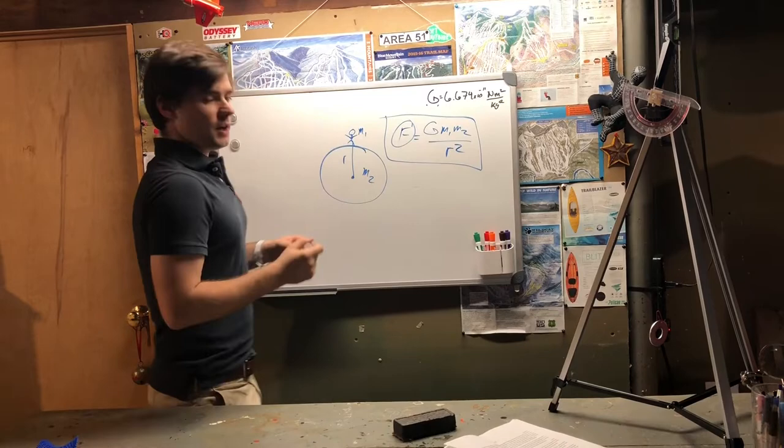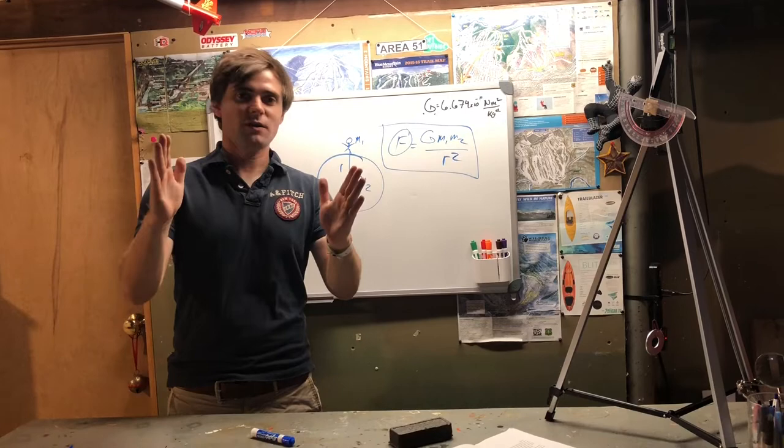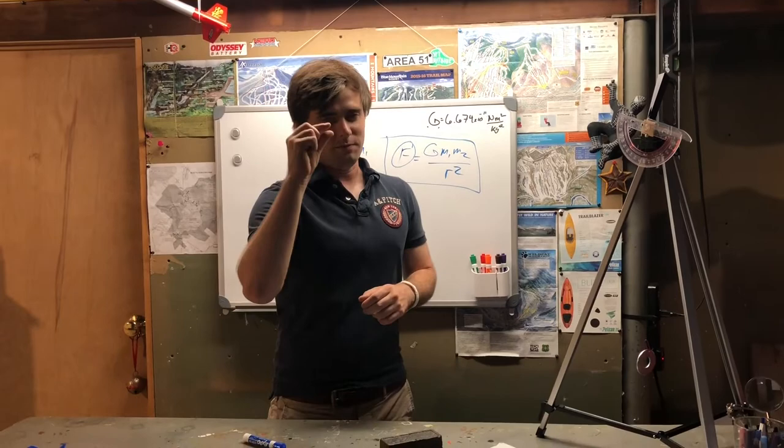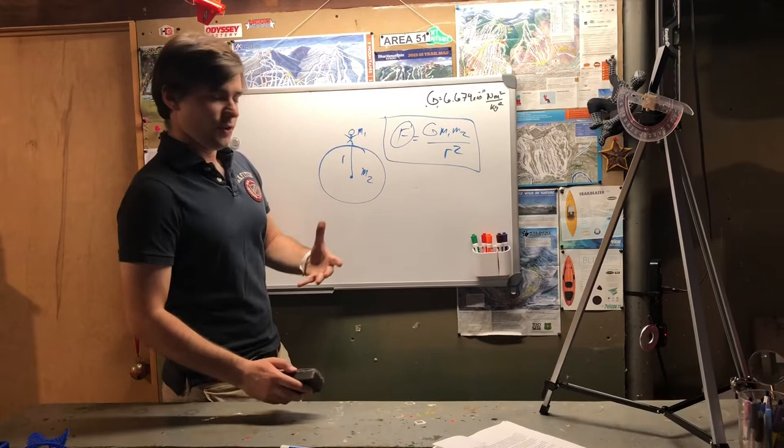Now, one interesting thing that this equation implies is that when you jump up off of the Earth, and you put a small distance between the two of you, the Earth is pulling you down to it, and you're actually pulling the Earth up to you. The difference in mass between the two of you is so great that the Earth moves a very, very, very small amount, but it still happens, and that is pretty neat.